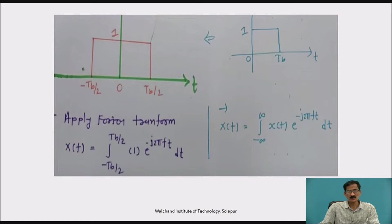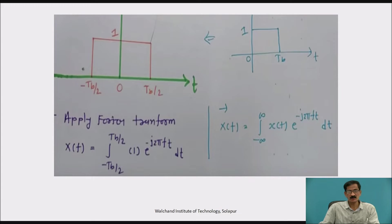On the right side top corner, this is a rectangular pulse having amplitude 1, from 0 to T_b. For non-return to zero bipolar, the time-shifted version is shown on the left-hand top side with the time period T_b, which is from minus T_b/2 to T_b/2, having unit length 1.